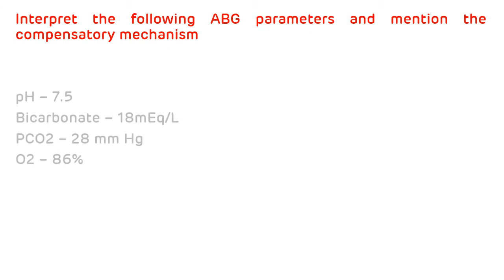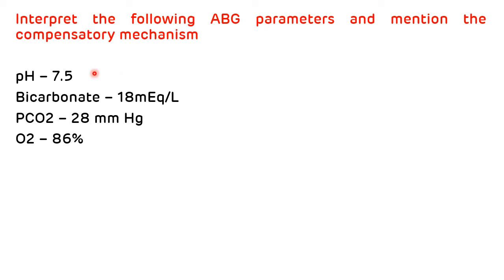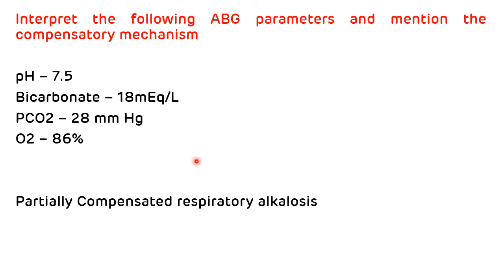Case study 3c: pH is 7.5 — increased, so it is alkalosis. Bicarbonate is 18 mEq/L — low. PCO2 is 28 mmHg — also low. The elevated pH with reduced PCO2 indicates respiratory alkalosis. However, bicarbonate is also low, showing that renal compensation has begun. Because pH is not yet normal, this is a partially compensated respiratory alkalosis. If pH were normal, it would be fully compensated.